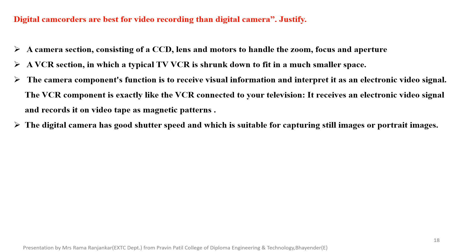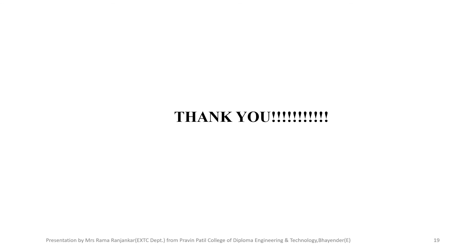This diagram shows the working principle of a digital camera. Digital camcorders are used for video recording. The first camera section consists of CCD, lens, and meters to handle the zoom, focus, and aperture. The second section, typical to the VCR, is shrunk down to fit in a much smaller space. The camera component's function is to receive visual information and interface with camera phone and TV signal. The digital camera has a good shutter speed, which is suitable for capturing stable images. Thank you.